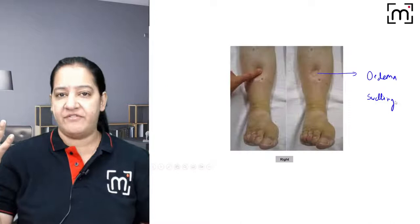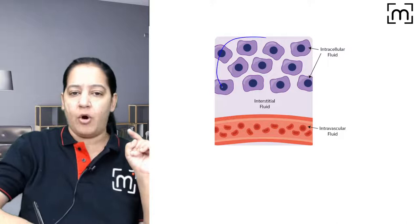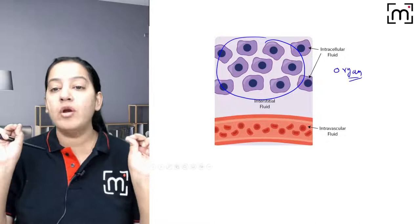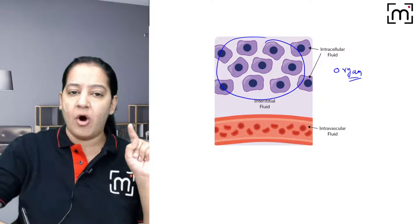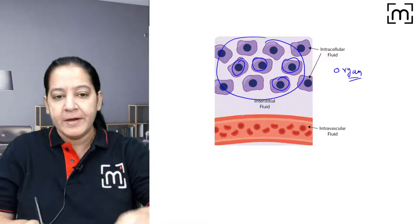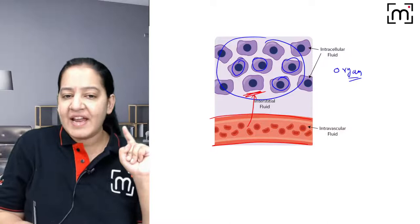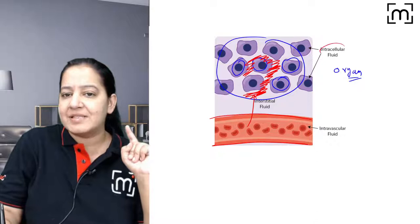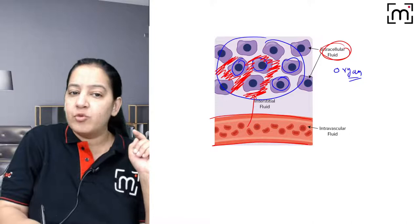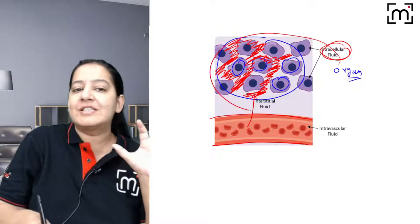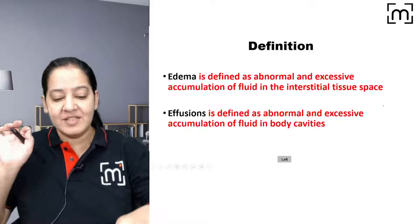Now, why does edema occur? Consider any organ — all organs are made up of cells. There is a blood vessel supplying this organ. Whenever fluid comes out of the blood vessel and accumulates in the interstitial space — the space between adjacent cells — the organ swells. This is known as edema.